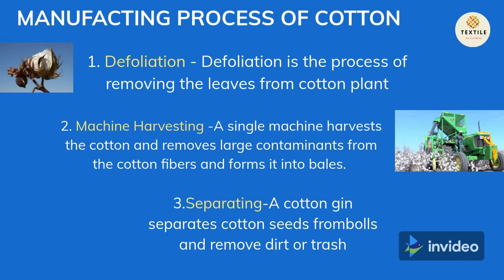Machine Harvesting: A single machine harvests the cotton, removes large contaminants from the cotton fibers, and forms it into a bed.